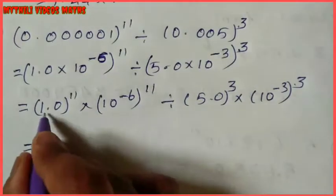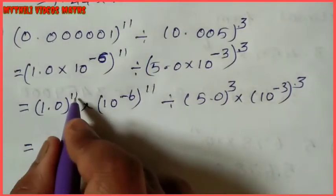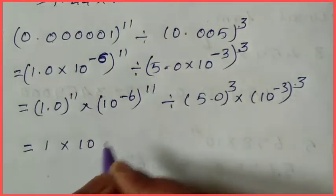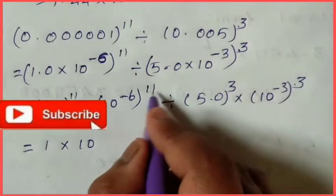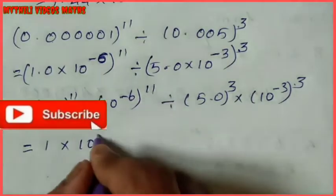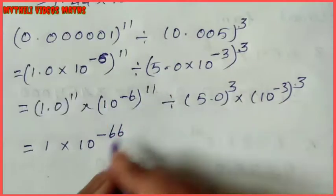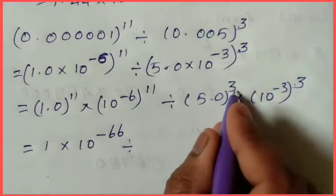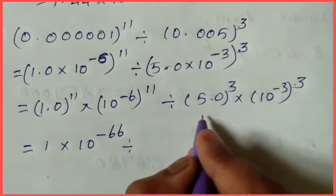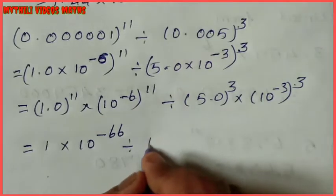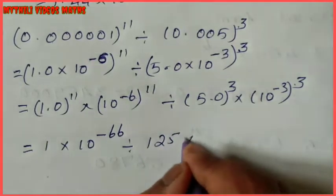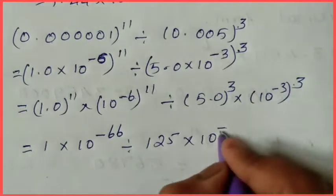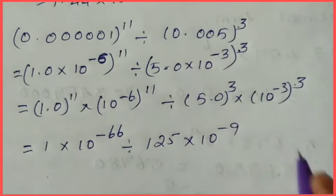Next line: 1 power 11 — 1 to any power is always 1. Into 10 power: minus 6 times 11 equals minus 66. Divided by 5 power 3. So 5 into 5 into 5 multiplied gives 125. Into 10 power: plus into minus gives minus; 3 times 3 is 9, so minus 9.